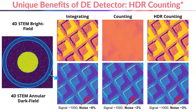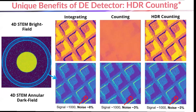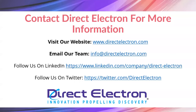What HDR counting does is allow us to get the best of both worlds. The HDR counting algorithm returns an image that's basically the same as the integrating mode image for the bright field, and returns a counted image for the dark field — so you get the best possible combination. To learn more about DirectElectron and applications of our direct detectors, please visit our website, get in touch with us via email, or follow us online. Thank you.